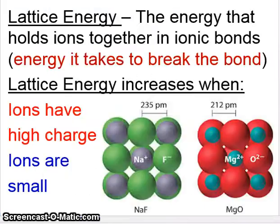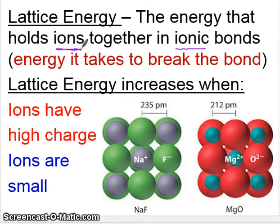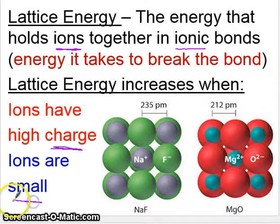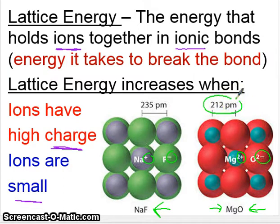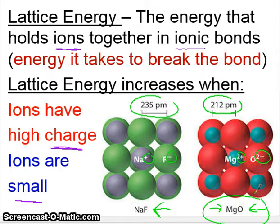Now let's apply the same idea to ionic compounds. With ionic compounds, bond strength is measured by something called lattice energy — the energy it takes to break the ionic bond and the energy that holds ions together. Two factors increase lattice energy: high ionic charges (like plus two or plus three) and small ion size. For example, magnesium oxide has plus two and minus two charges and smaller ion distance, while sodium fluoride has plus one and minus one charges with greater distance, so magnesium oxide has the higher lattice energy.